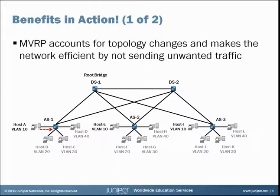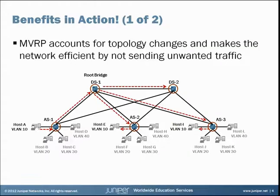On this slide, again, we have the same basic network. Assuming we do not yet have MVRP, let's describe the behavior we would see for traffic flowing in this network. Here on the left we see host A, which is associated with VLAN 10 connected to the AS1 access switch. This is traffic that would be flooded throughout the layer 2 domain — such as broadcast traffic, unknown unicast traffic, or multicast traffic. The default behavior is that traffic would be sent to the root bridge, which would then flood that traffic onto any downstream devices, distribution switches, or access switches servicing VLAN 10.